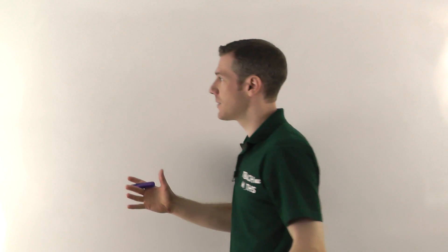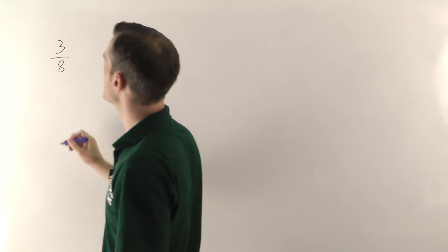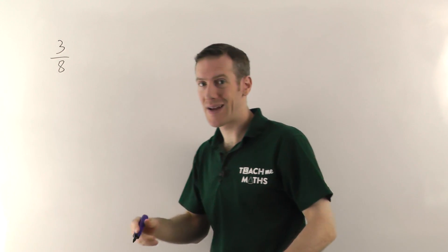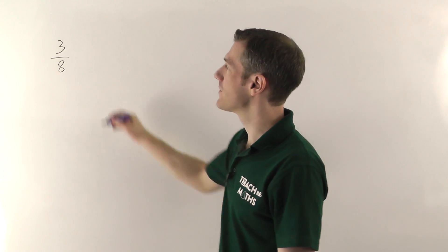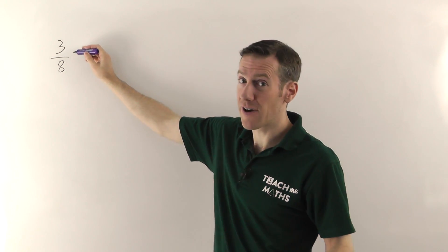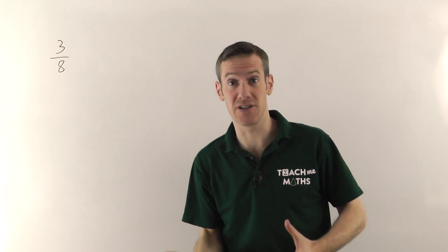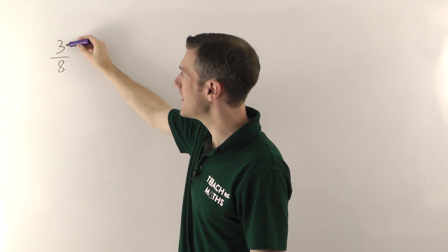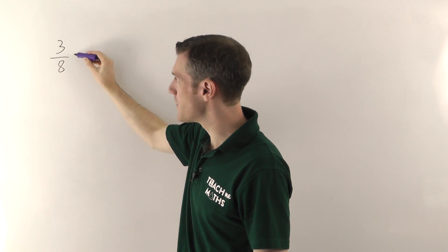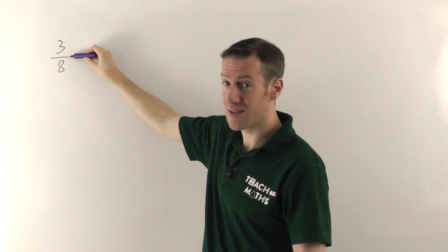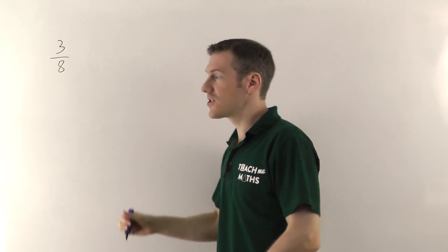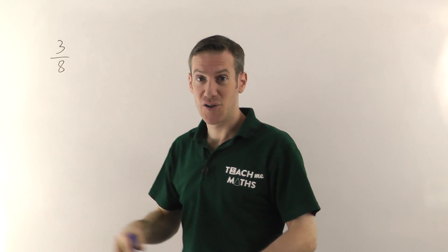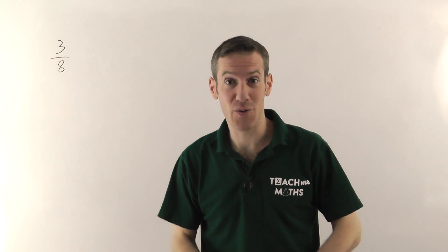So I'll start with an example. Imagine you've got 3 eighths and you want to convert it into a decimal number. Now what you need to remember is that a fraction — any fraction — is essentially just a division. This means 3 divided by 8. The line in the middle means division, means divided by. So if you just divide 3 by 8, you can work out what it is as a decimal.